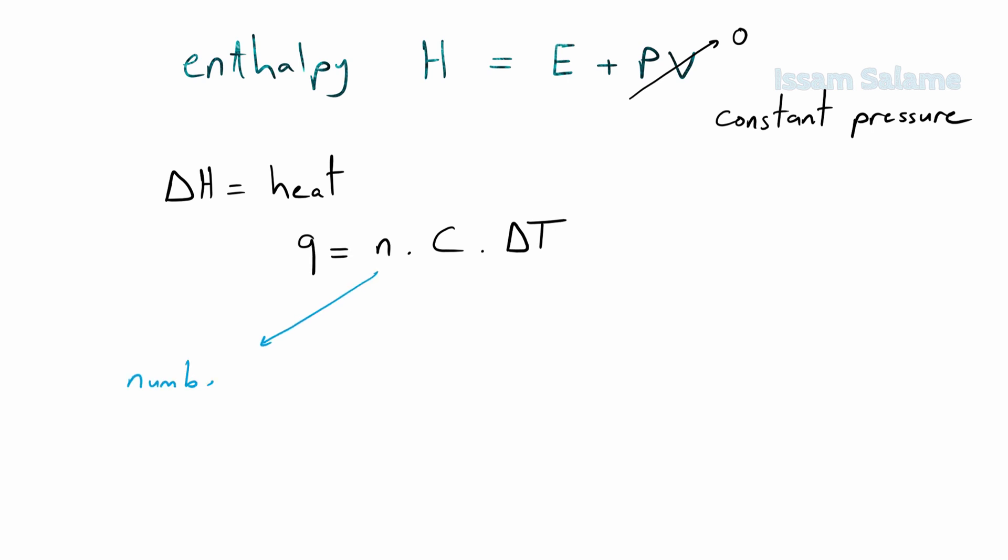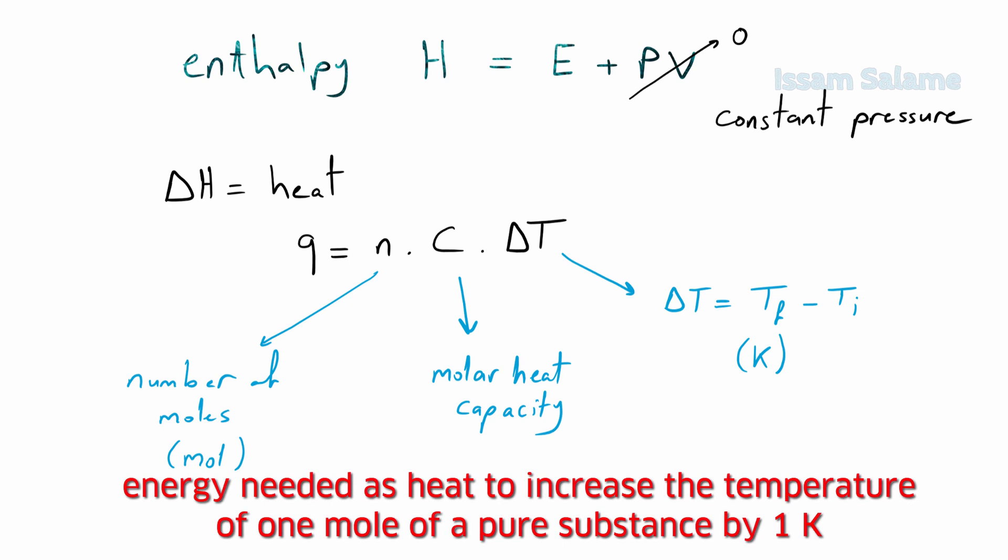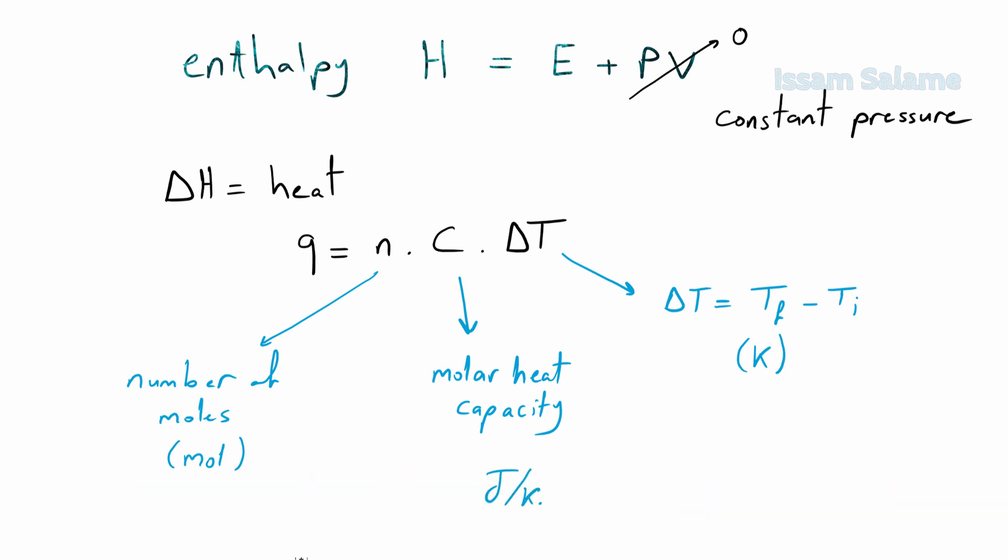Where N is the number of moles and its unit is moles. Delta T is a change in the temperature - it's T final minus T initial, final temperature minus initial temperature. The unit for that is Kelvin. And finally, the capital letter C is for molar heat capacity, which is the energy needed as heat to increase the temperature of one mole of pure substance by one degree Kelvin, and its unit is joules per Kelvin dot mole.